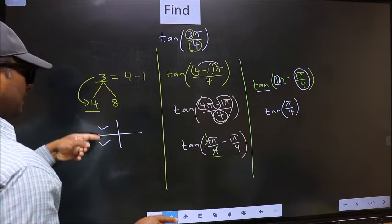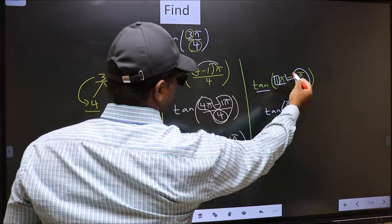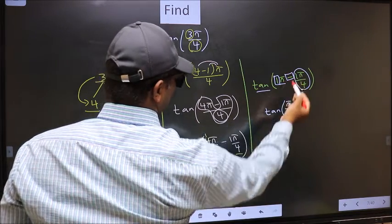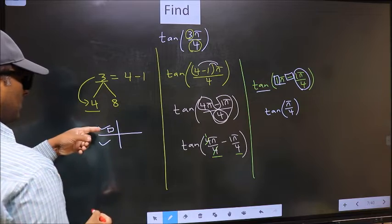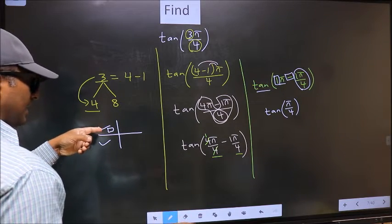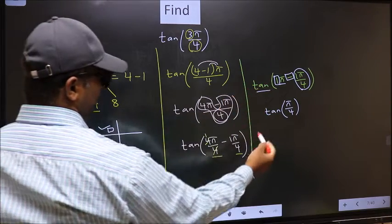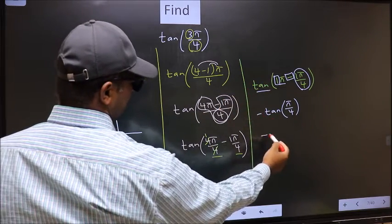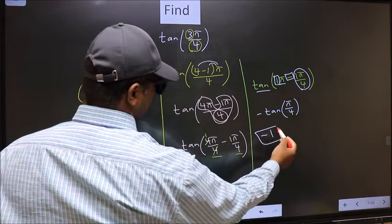So now to select the quadrant, we should look at this symbol. Here we have negative. That means the angle lies in the second quadrant. And in the second quadrant, tan is negative. So we should put negative. So negative tan π/4 is 1. This is our answer.